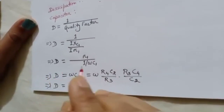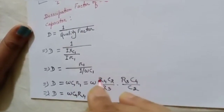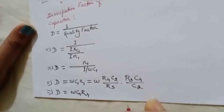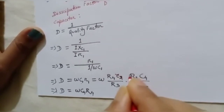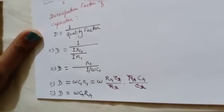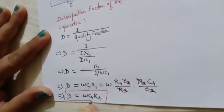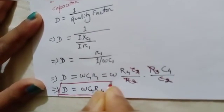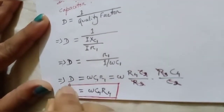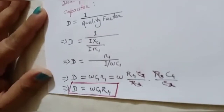From the balance condition we found values of C1 and R1. Substituting them into the dissipation factor equation, C2 cancels with C2 and R3 cancels with R3. Finally, the dissipation factor D equals ωC4·R4. This means by varying the variable parameters C4 and R4 of the circuit we can change the dissipation factor of the unknown capacitor.